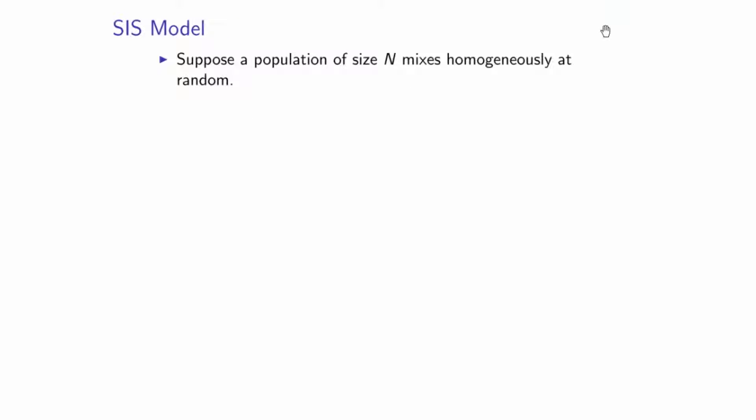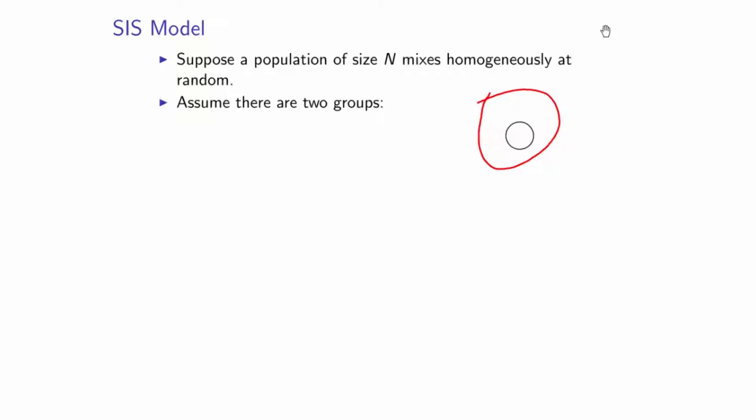The first model we will introduce consists of two compartments. Before writing equations, we need to make assumptions. We're going to assume there is a population of N individuals, and that these individuals are mixing homogeneously at random. We then split this population of size N into two groups. One group is called S and the other is called I.